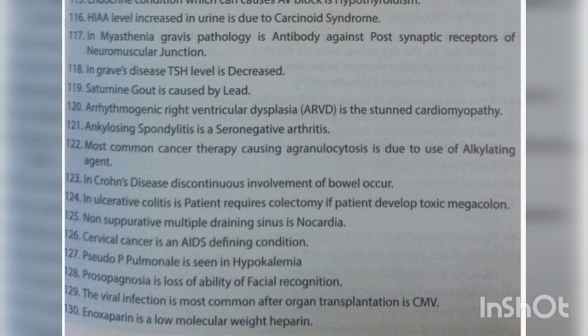In Graves' disease, TSH level is decreased. Saturnine gout is caused by lead. Arrhythmogenic right ventricular dysplasia is the standard cardiomyopathy. Ankylosing spondylitis is a seronegative arthritis. The most common cancer therapy causing agranulocytosis is due to use of alkylating agents. In Crohn's disease, discontinuous involvement of the bowel occurs. In ulcerative colitis, a patient requires colectomy if they develop toxic megacolon.